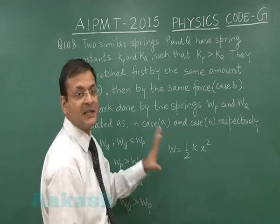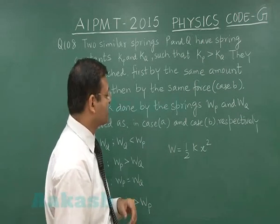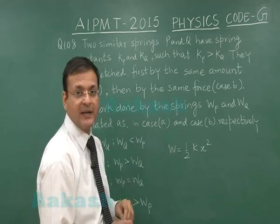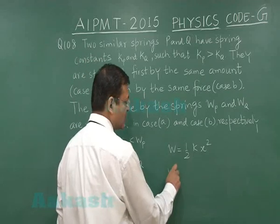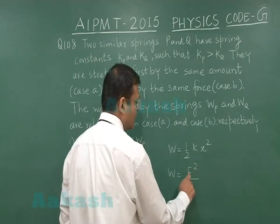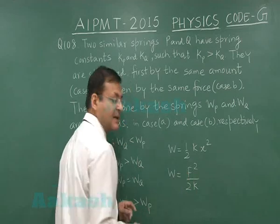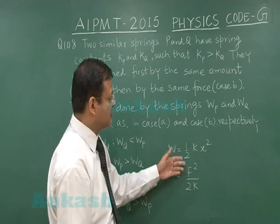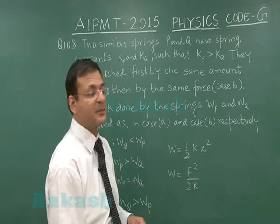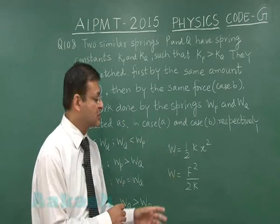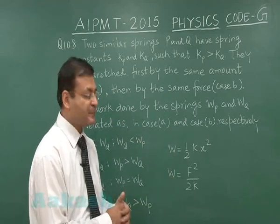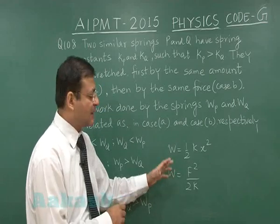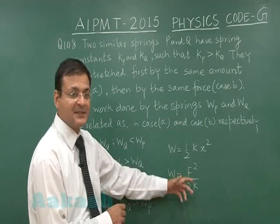In the second case, if it is by the same force, then I will be using the equation W equals F squared by 2K. As you know, F equals Kx, so ultimately it will be the same expression. But in the second case, since they have been stressed by the same force, I will have to use this relation. So in the second case, you will find that W maintains a reverse ratio compared to K.